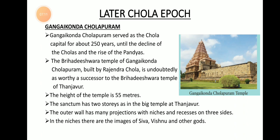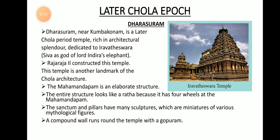The outer walls of the Gangaikonda Cholapuram temple have many projections with niches and recesses on three sides. There are many rectangular-shaped niches, and within these niches there are images of Shiva, Vishnu, and other goddesses. These are some of the important features of the earlier and later Chola epoch.